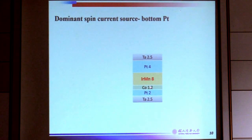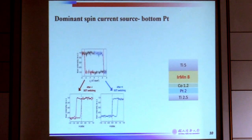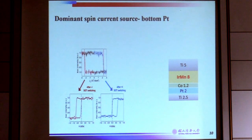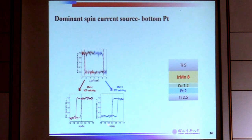In the original structure, we also have tantalum as an adhesion layer and tantalum as a capping layer. One may argue that tantalum could give complicated spin current contributions to the structure. To identify the dominating spin current, we replaced all tantalum with titanium. Titanium is well known to have a very small, nearly negligible spin Hall angle, giving us a much cleaner system where the only spin current we expect is from the platinum. In this cleaner system, we observe very similar behavior as before, even without top platinum.